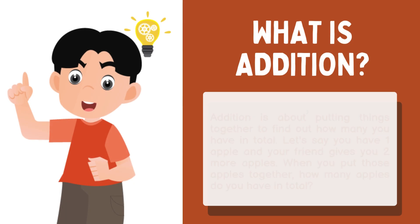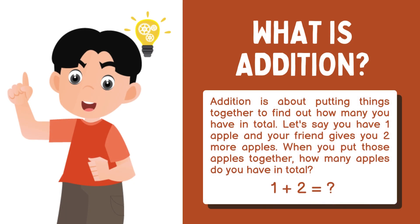What is addition? Addition is about putting things together to find out how many you have in total. Let's say you have one apple and your friend gives you two more apples. When you put those apples together, how many apples do you have in total? One plus two — the answer is three apples.